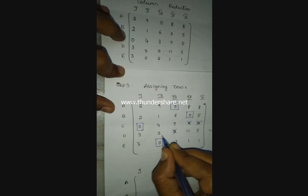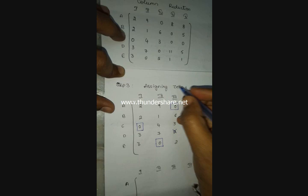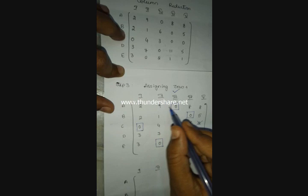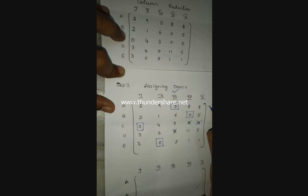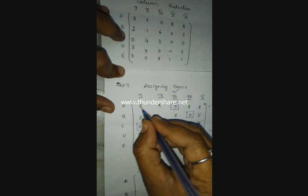First, mark rows where no assignment was made — that is the fourth row. Then check that row for any cancelled zeros and mark the corresponding column — that is the third column. Next, check the marked column for any assigned zeros and mark that corresponding row.